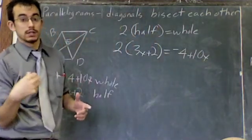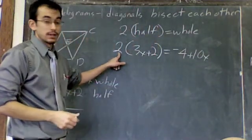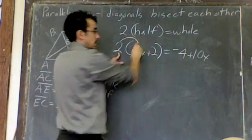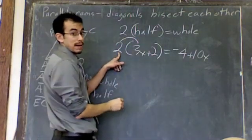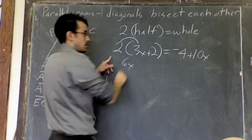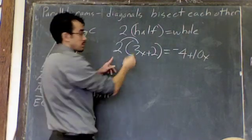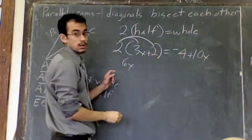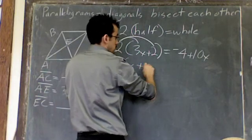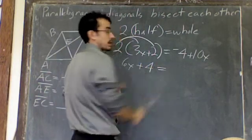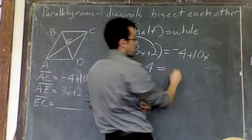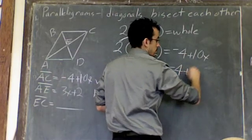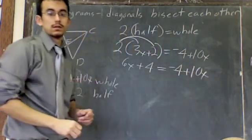How you're going to solve this is you're going to distribute. This 2 times the first term in the parenthesis. 2 times 3X is 6X. And then distribute the 2 to the other term in the parenthesis. 2 times 2 is 4. So, plus 4. Bring everything else down. Equals negative 4 plus 10X.